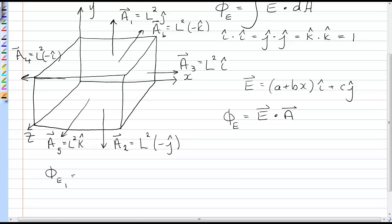So the electric field for face 1 would be E dot A1. And A1 has a j-hat component, so I'm just going to get cL squared. j-hat dot j-hat is 1, j-hat dot i-hat is 0.